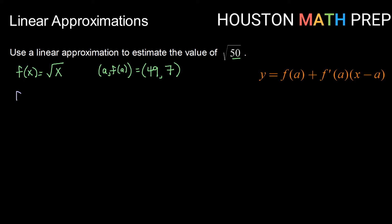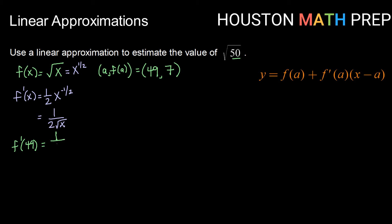Now we take our derivative. Remembering that √x can be written as x to the one-half power, we get a derivative of one-half x to the negative one-half, which we rewrite as 1 over 2√x. Evaluating at a = 49, we get 1 over (2 times √49), which is 1 over (2 times 7), or 1/14.